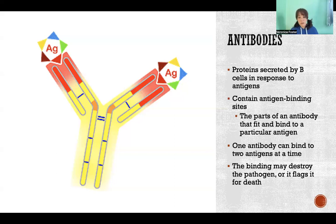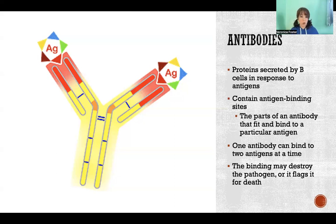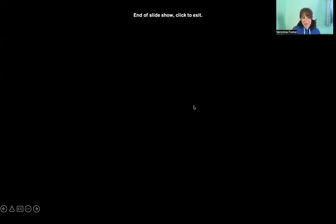The more different pathogens we're exposed to, the more different types of antibodies we'll have in circulation, because B cells will differentiate to target that particular pathogen and produce antibodies that also target it. Thanks so much for watching this video, and I'll see you in the next one.